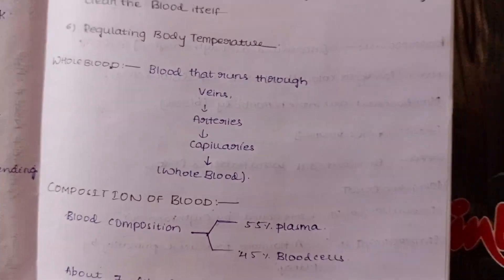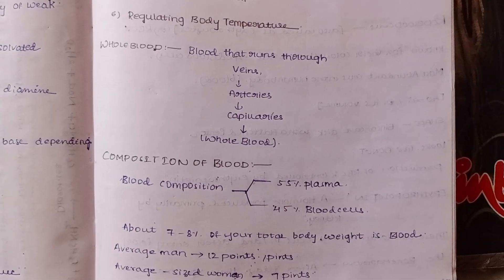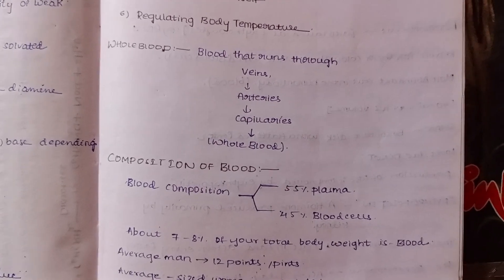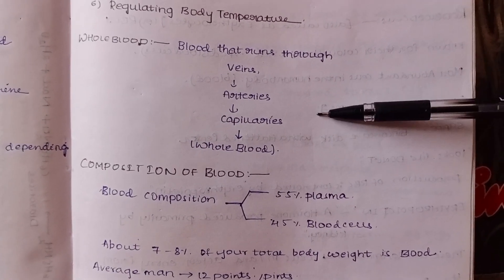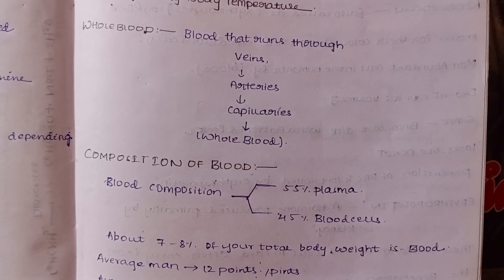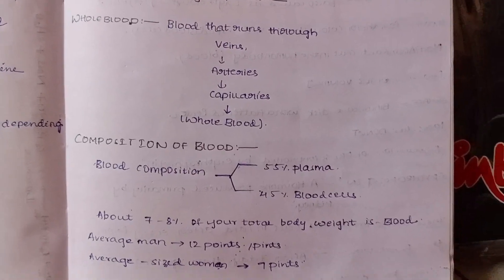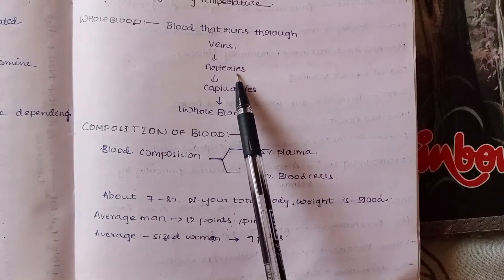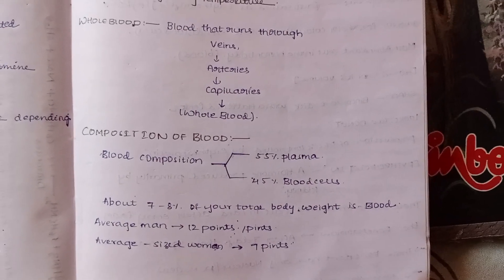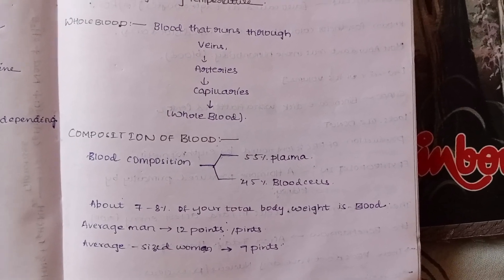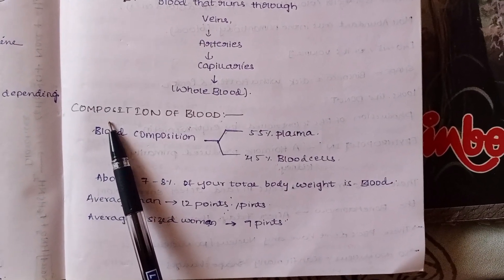Now, the definition of whole blood: whole blood is blood that runs through veins, arteries, and capillaries. These act as mediating pipes — veins, arteries, and capillaries carry and transport blood to different parts of the body.